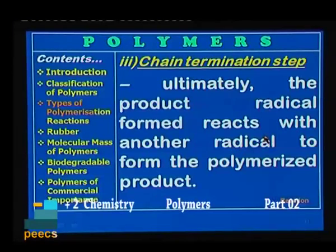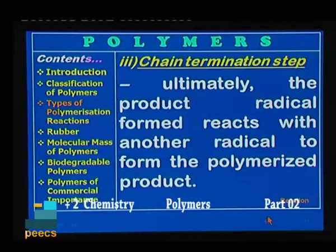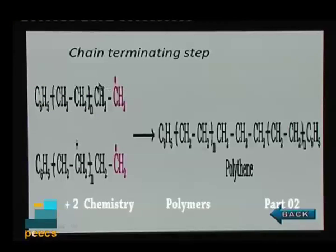The final step is chain termination — termination means stopping. Here the product radical reacts with another radical to form the polymerized product. The polymerization process stops, hence it is called chain termination. The two free radical species combine together to form a neutral species, which is the polymer.